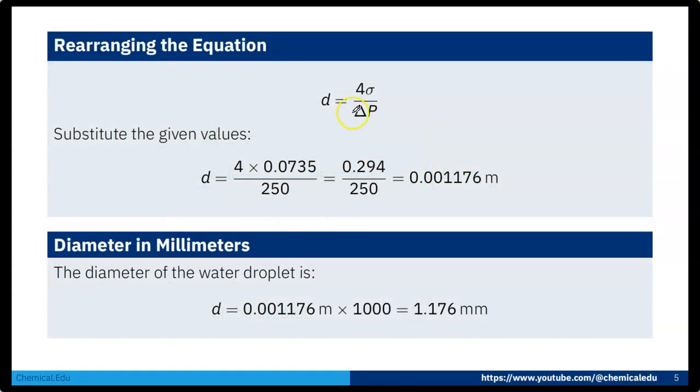Now if we rearrange, D will be 4 sigma by del P. Substituting the given values, D equals 4 times 0.0735 divided by 250. If we do the calculation, we will get 0.001176 meter.